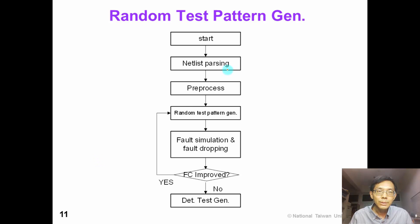Here is a typical flowchart for random pattern generation. After the pre-processing stage, we will start to generate random test patterns. We fault simulate these random patterns and we drop the detected faults. If the fault coverage still improves, then we go back and generate more random patterns. If the fault coverage does not improve significantly, then we move on to deterministic test pattern generation.